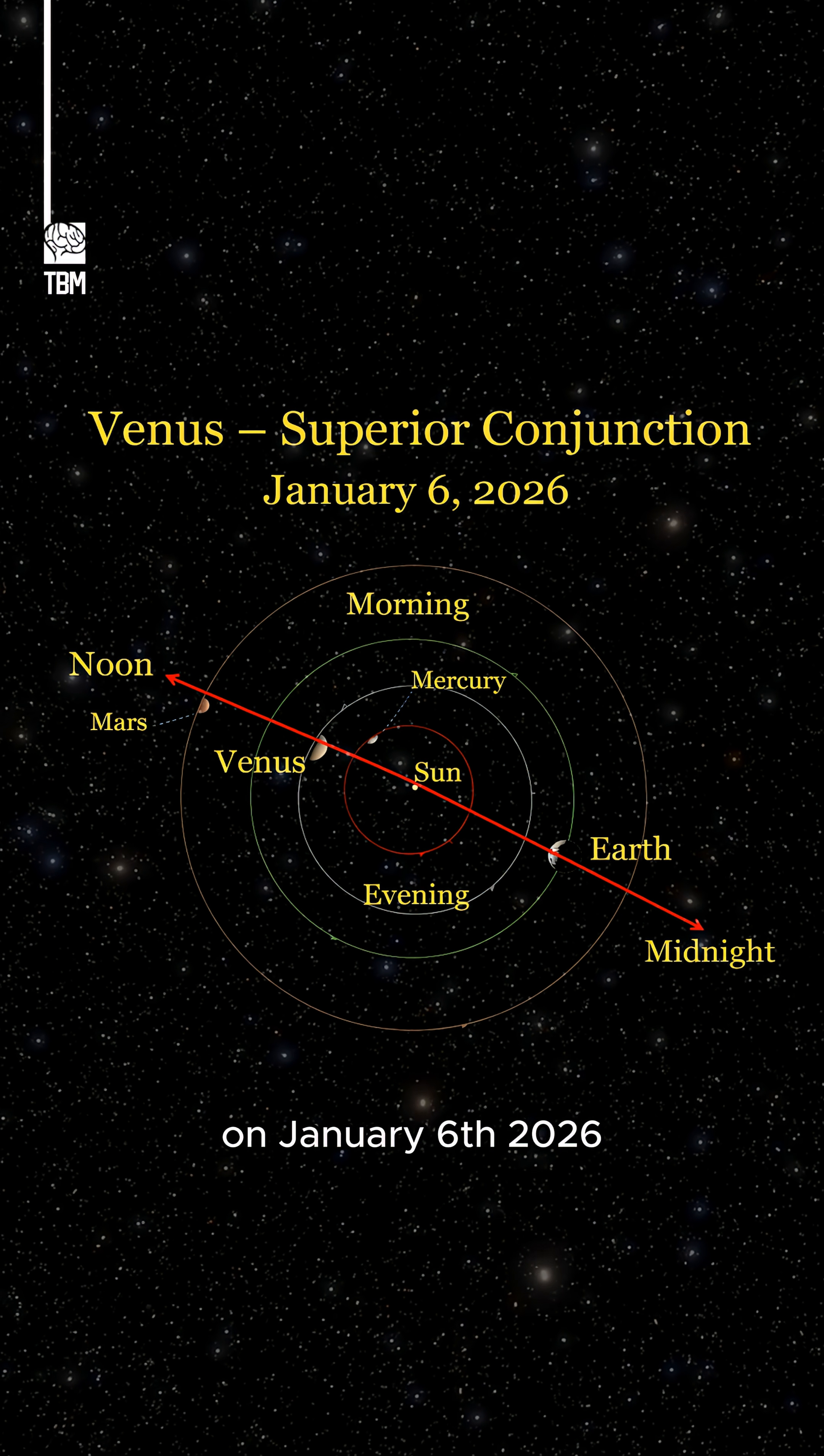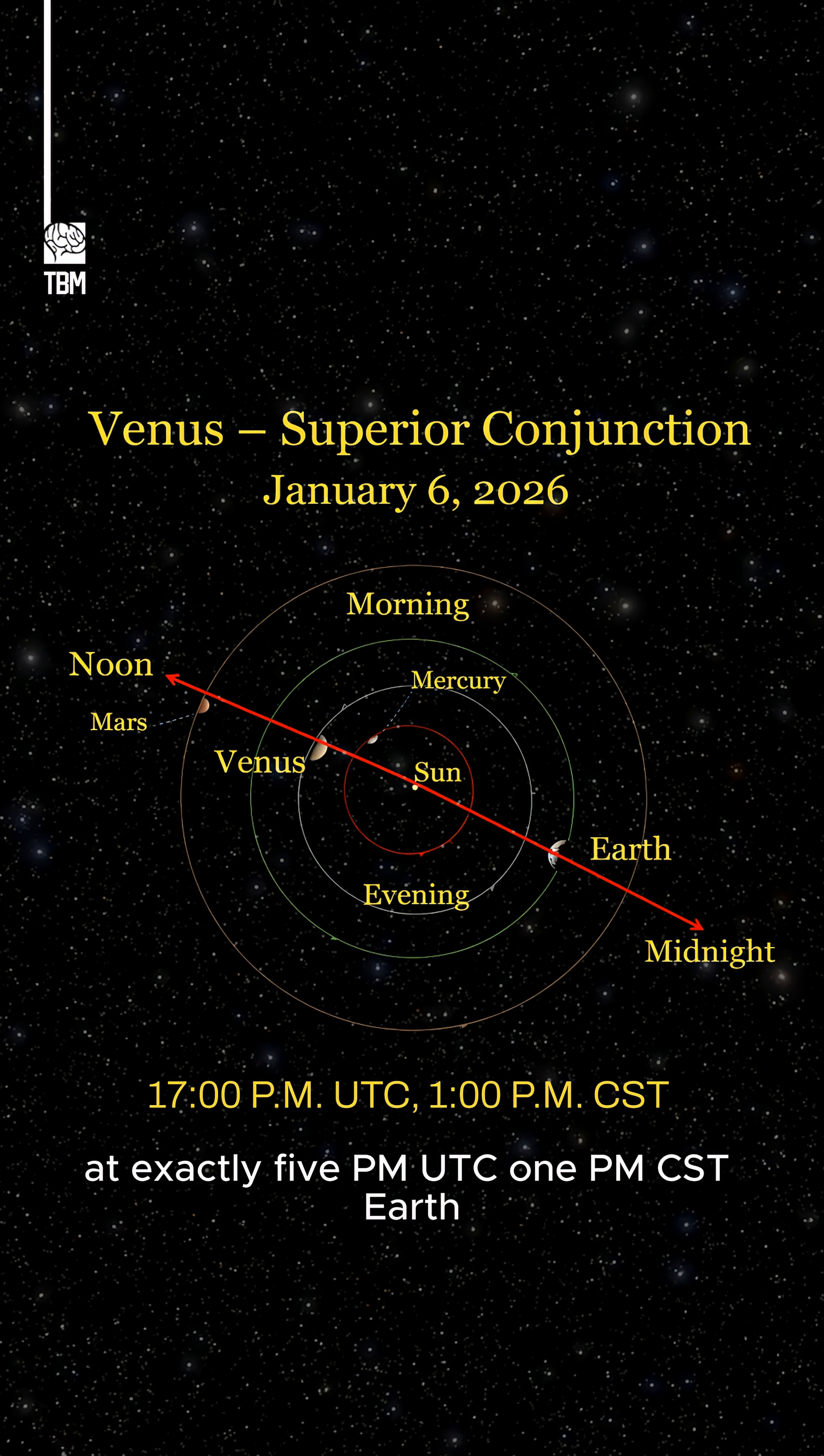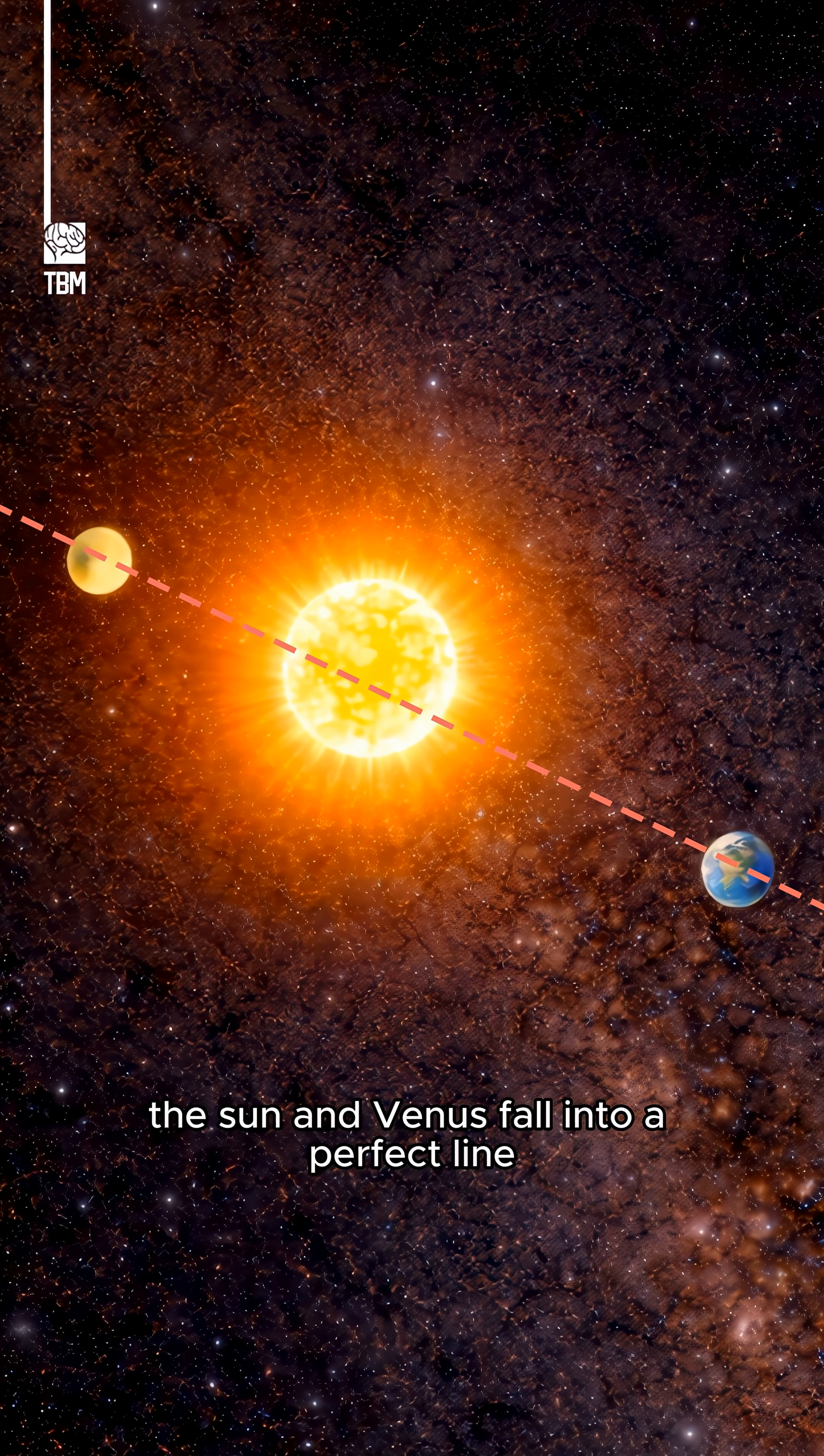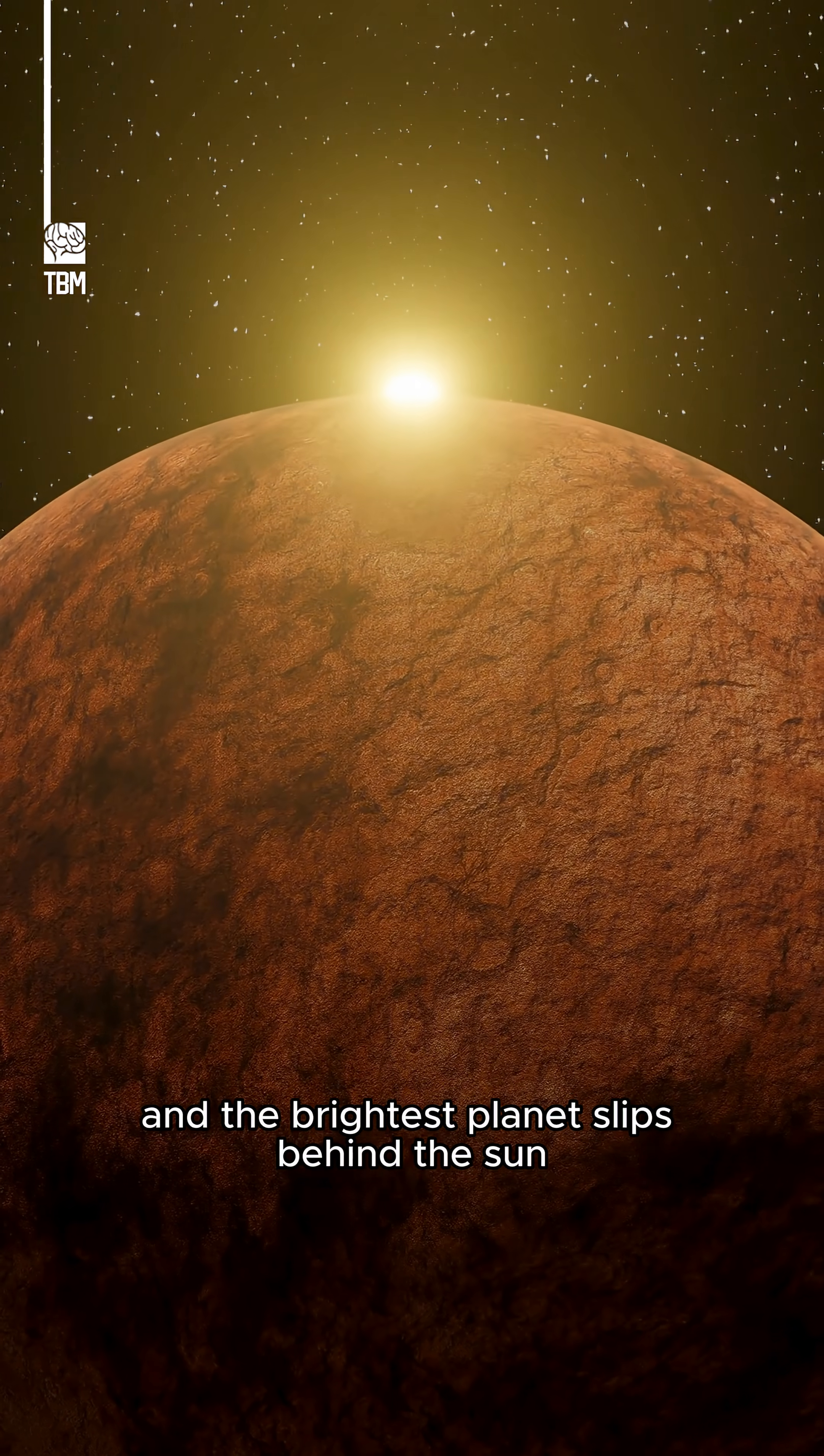On January 6, 2026, at exactly 5 PM UTC, 1 PM CST, Earth, the sun, and Venus fall into a perfect line, and the brightest planet slips behind the sun, disappearing into pure brilliance.